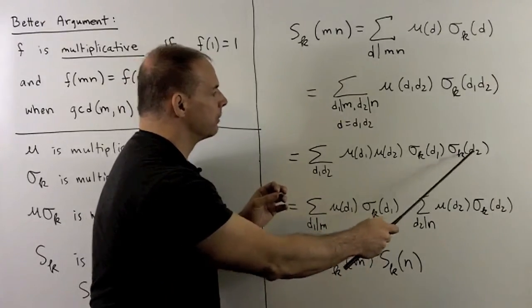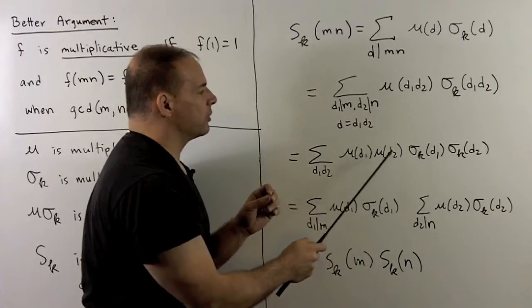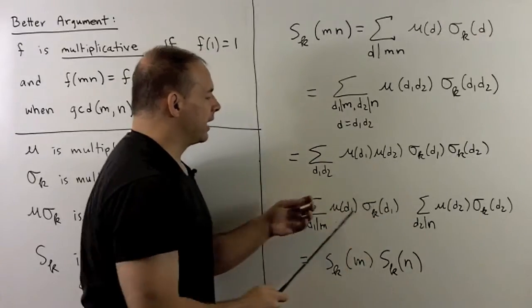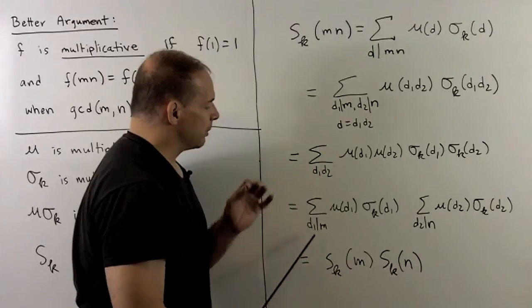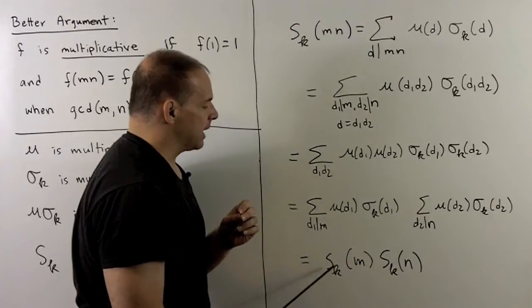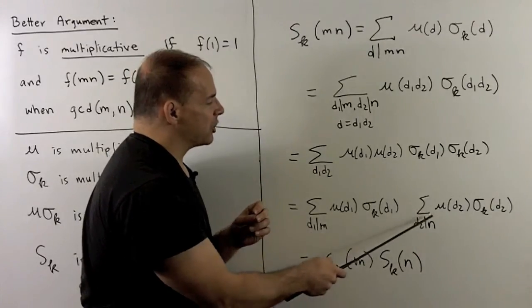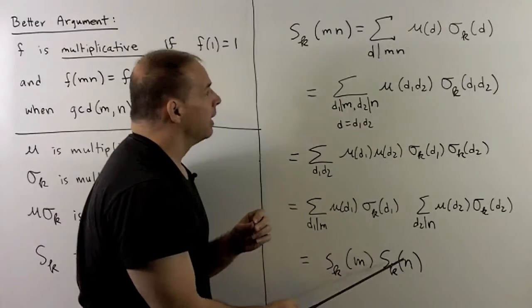Now we collect terms. So I'll put the d1 terms together, the d2 terms together. Then I can split this into two sums. First sum, just going to be divisors of m, so I'll get S sub k m. Second one is the divisors of n, so I get S sub k n. And we have that, S sub k is multiplicative.